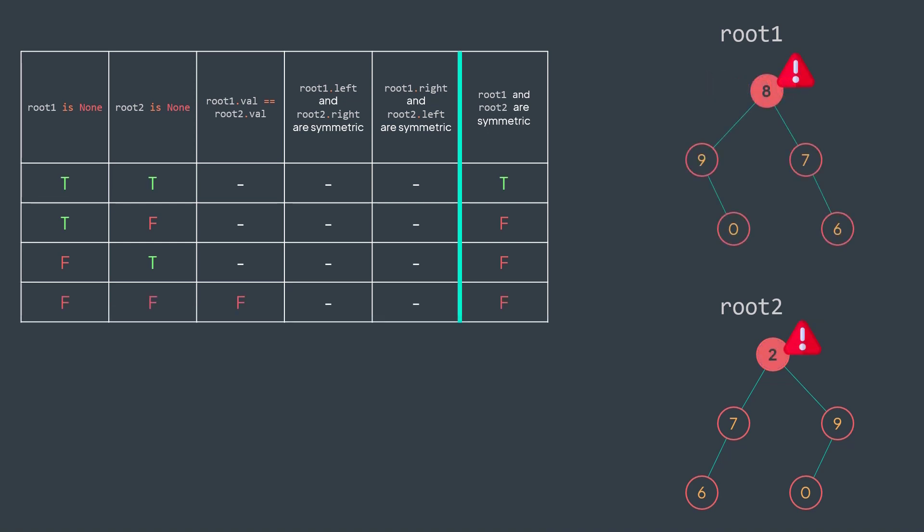Third case: both trees exist but their roots don't have the same value. Here also, they're not symmetric, because in symmetric trees the roots must have the same value — when we reverse a tree, the root position doesn't change. Last case: both trees exist and they have the same root value. In this case, we still can't say that they're symmetric, because having the same root value is not enough — we still need to check their subtrees.